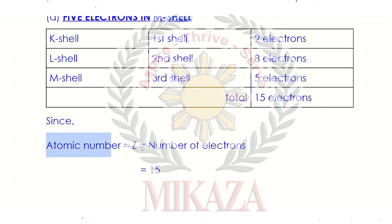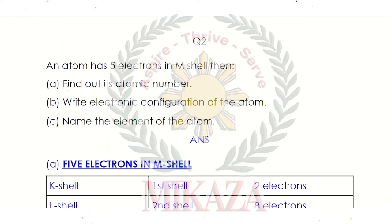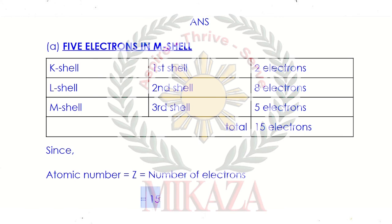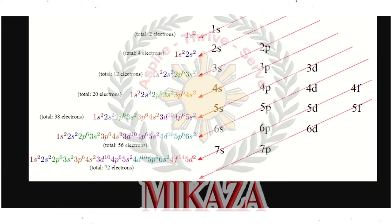We know that the number of electrons equals the atomic number. So if an element has 15 electrons, its atomic number is 15. Part (a): the atomic number is 15. For part (b), the electronic configuration — in the first shell we have 1s; in the second shell we have 2s and 2p; in the third shell we have 3s, 3p, 3d; in the fourth shell we have 4s, 4p, 4d, 4f.